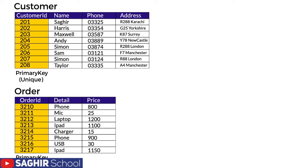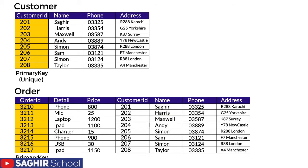We need to link them. One way is to add customer data to the order table so we know which order was made by which customer. However, this approach has two problems: it violates the normalization form of the database, which is a big no-no, and it causes data redundancy. There is already a customer table containing all customer properties, so duplicating it slows down the database — which is also a big no-no.